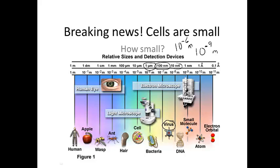We can't see any of these things with the naked eye. Even individual cells, which are up to about 10 micrometers, we can't see with the naked eye. You are responsible for knowing the relative sizes of cells, bacteria, viruses, and DNA, and you should know the SI units — nanometers and micrometers.